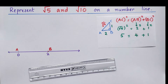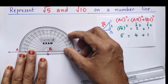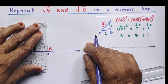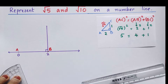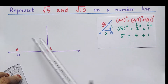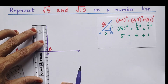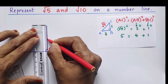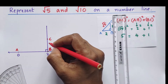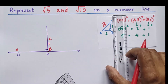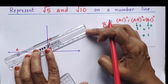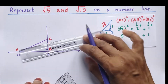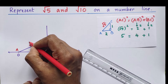At B we have to make a 90 degree angle. For that, I am taking a protractor and marking 90 degrees. Now we take BC as 1 unit, so I am taking 1 inch here. This point is C — 1 inch from B, and AB is 2 inches. Now join A and C, and we have got the right angle triangle whose hypotenuse length is root 5.